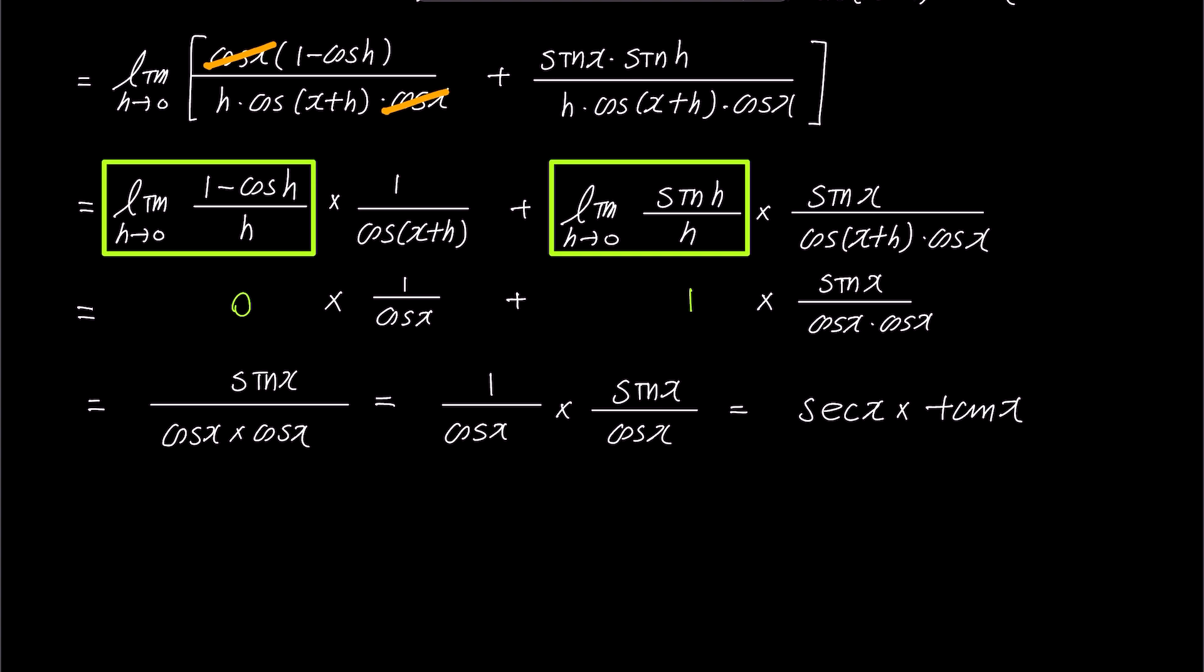This way, we have successfully proven using the first principle and the two limit values within the green boxes that the derivative of secant x is secant x times tangent x.